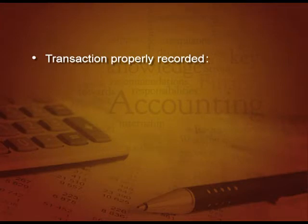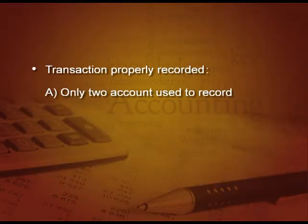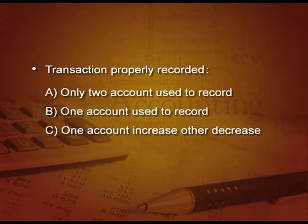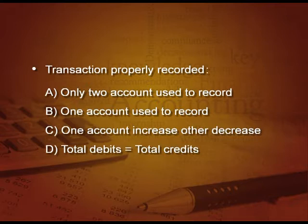Let us see another one. Transactions are properly recorded when — A) Only two accounts are used to record, B) One account is used to record, C) One account increases and the other decreases, or D) Total debit is equal to total credit. The right option is D, because when we record a transaction, all the debits are equal to credits, as we have already told you in the accounting equation.